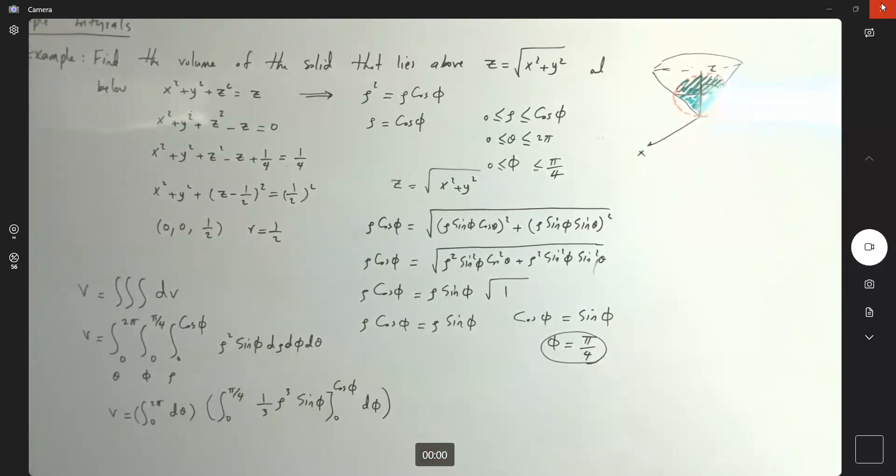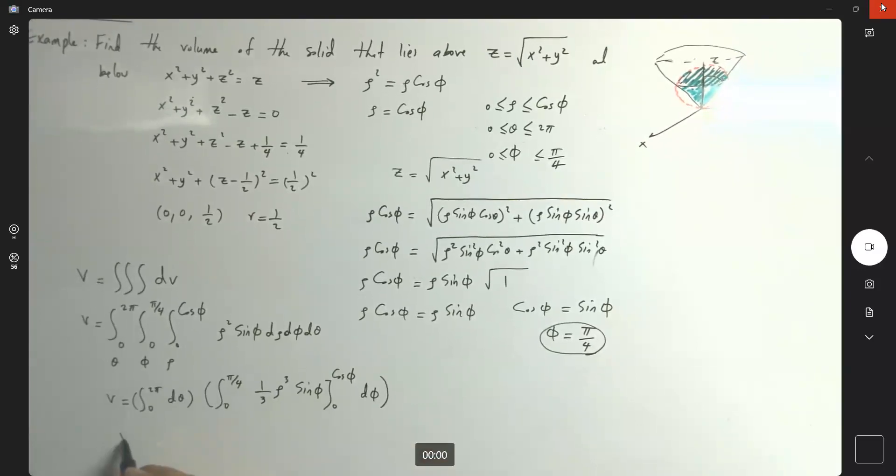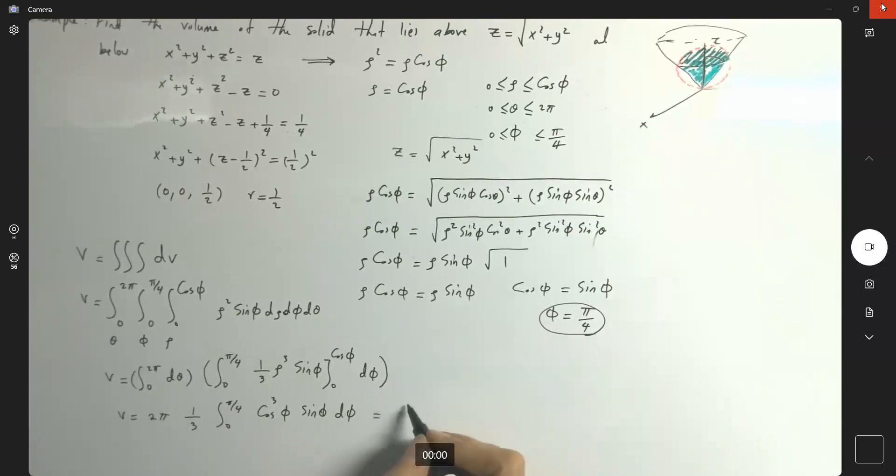So V becomes two pi, and I have a third. And if I plug that in here, I get integral zero to pi over 4, and I have cosine to the third phi, sine phi, d phi. So far looks good. So this guy becomes two pi over three.